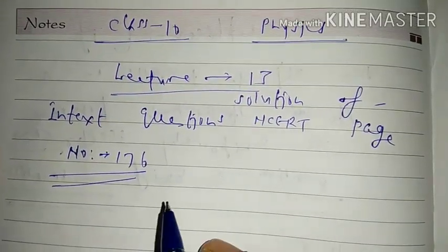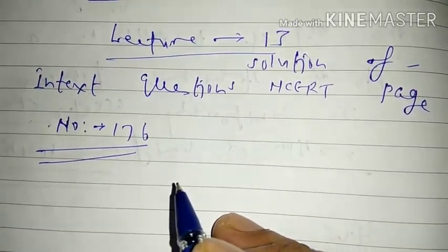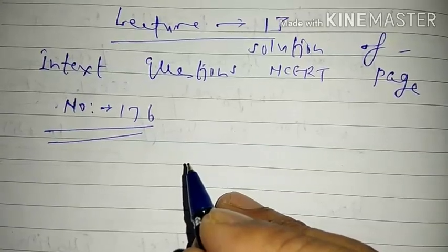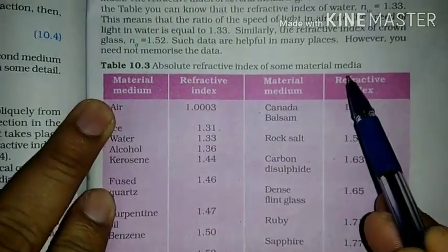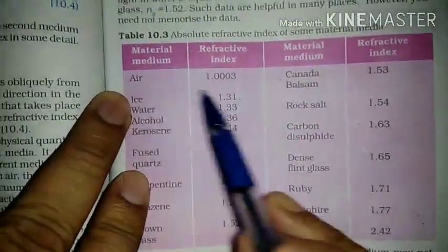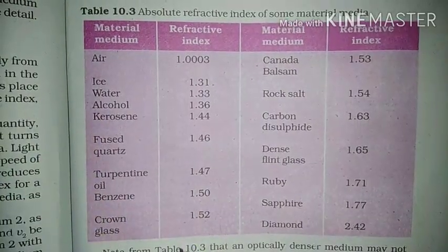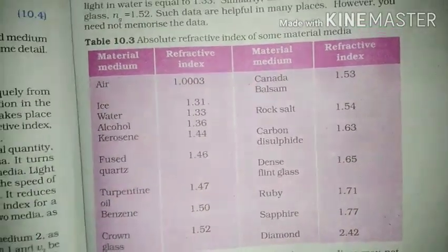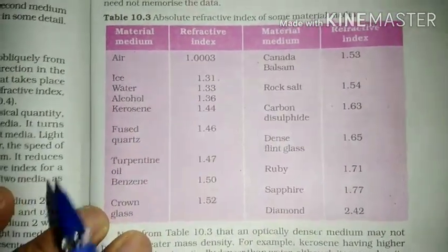Hello students. In my last lecture I discussed refractive index and absolute refractive index. Today we shall see some data available for refractive index for certain media, given in Table 10.3 — absolute refractive index of some material media. For air it is 1.003, for ice it is 1.31, given in increasing order, and finally for diamond it is 2.42.